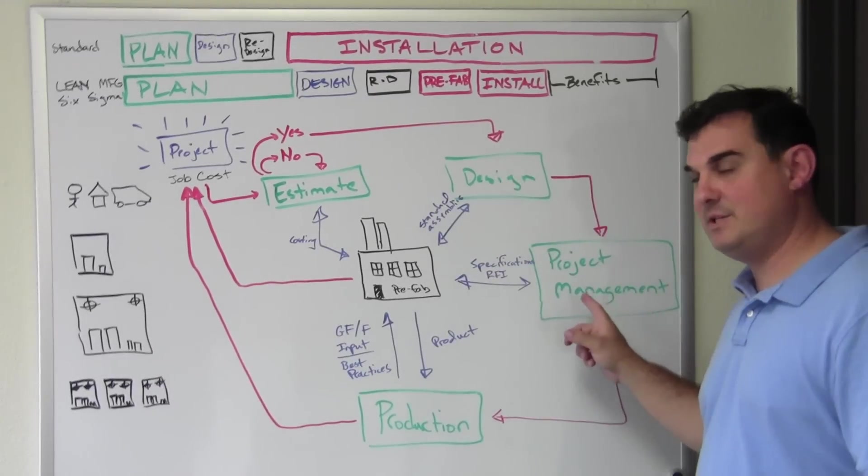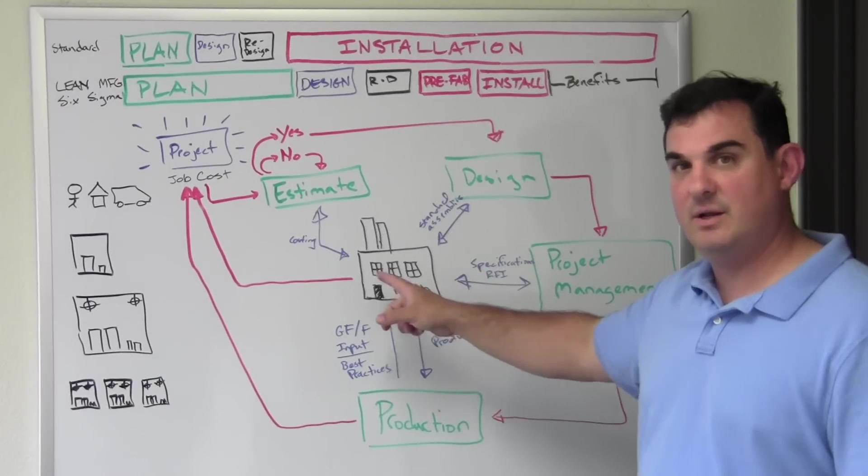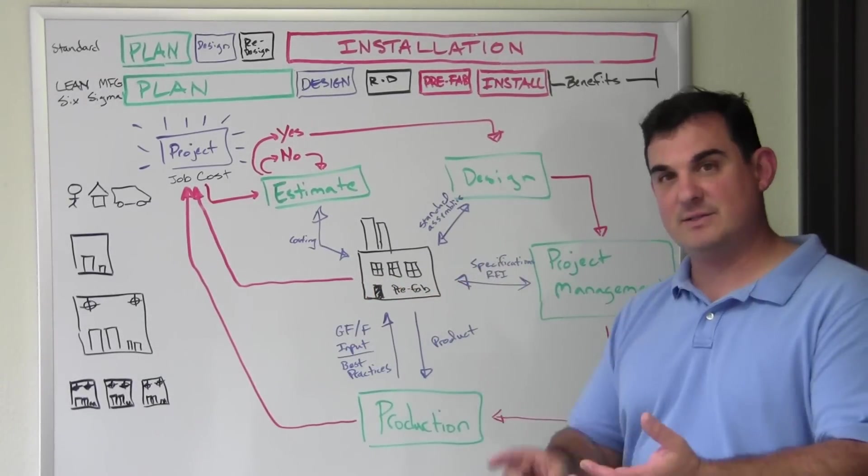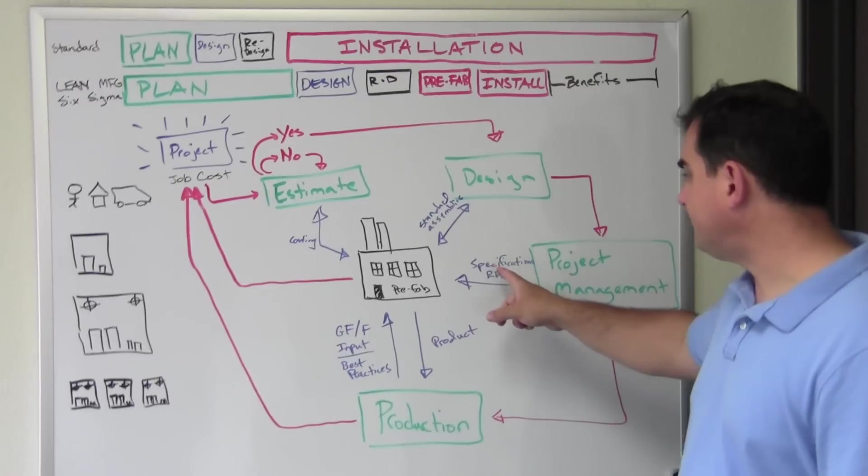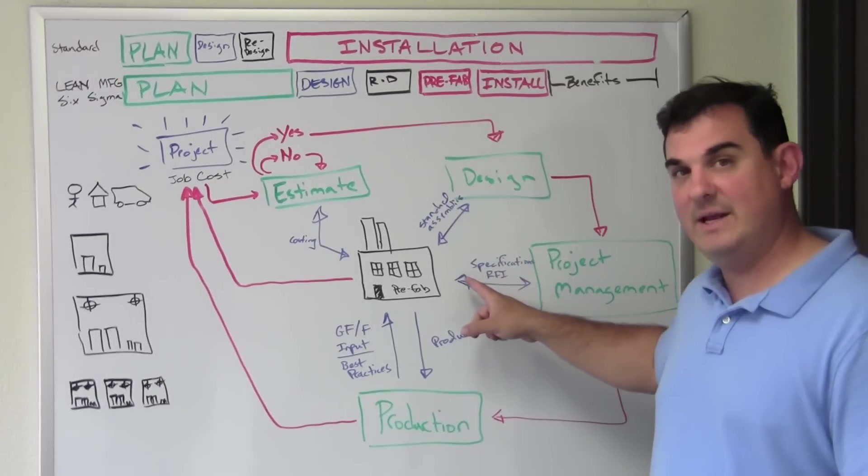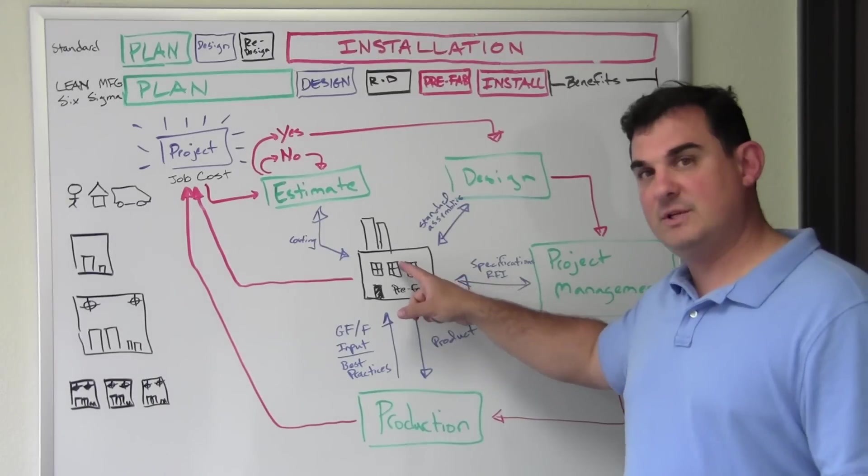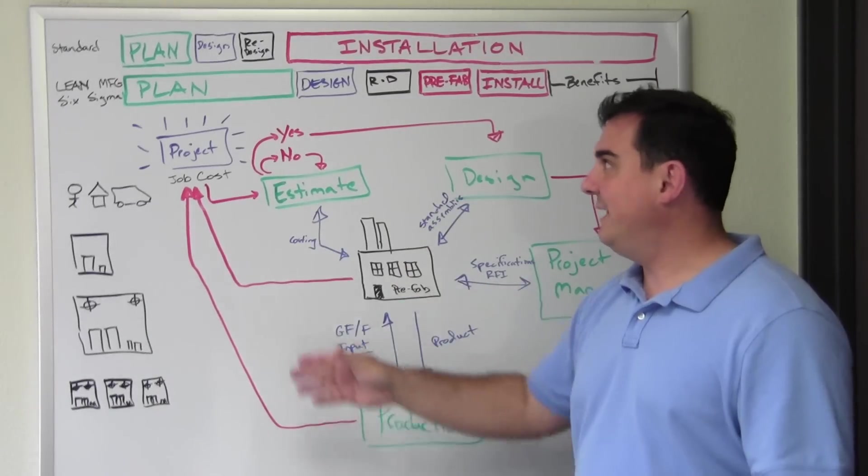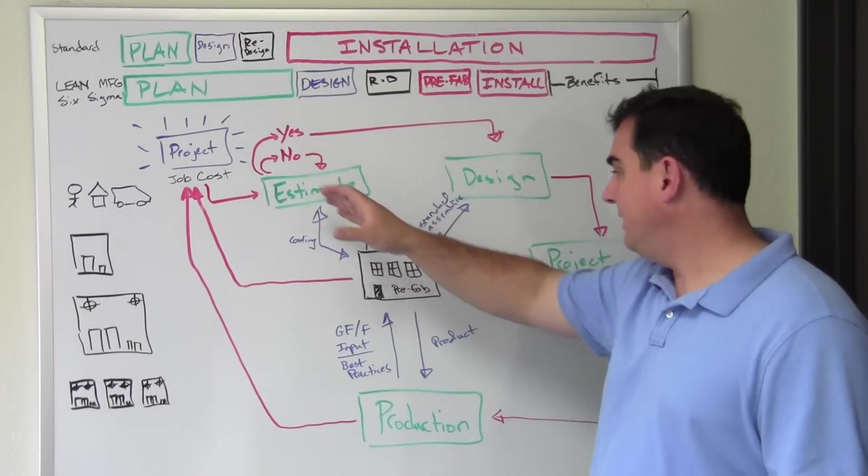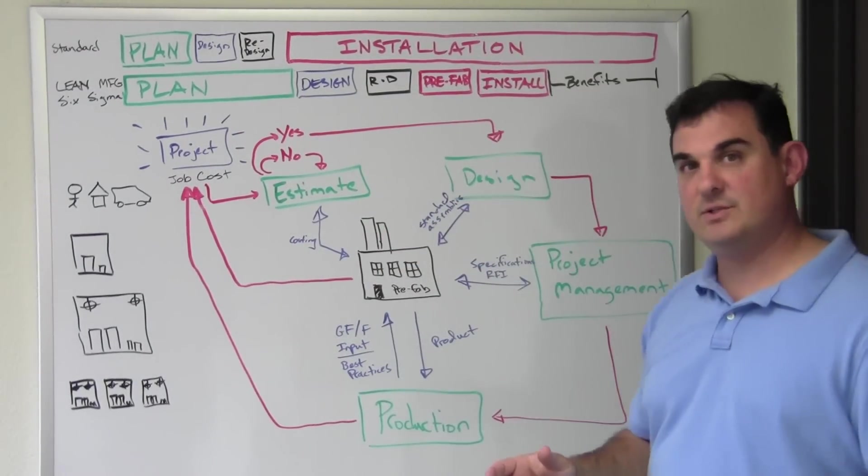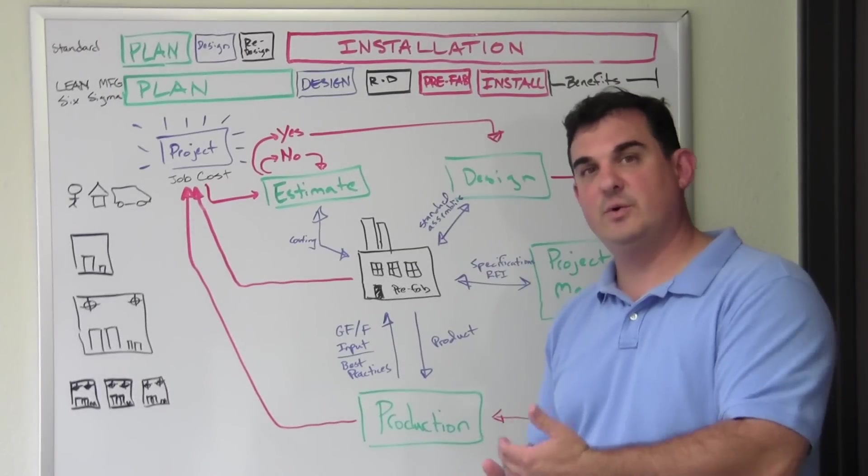Project management is aided by prefabrication by setting the job specs. You know, the same type of box, the same type of bracket, etc. And it should also aid when RFIs are submitted. Prefab looks at the job at the planning phase, sends out RFIs at the front end so that later on all those questions are answered in order to increase production.